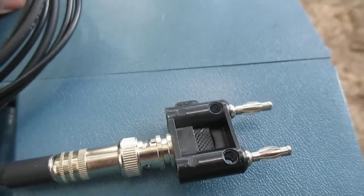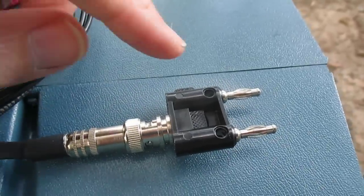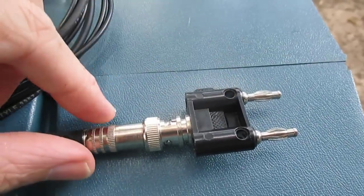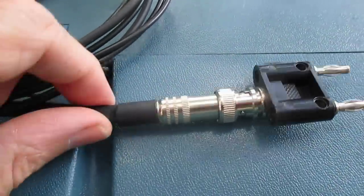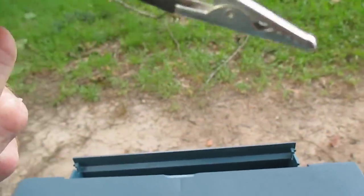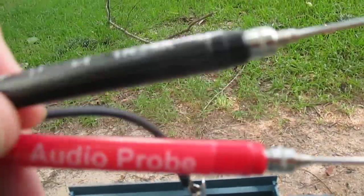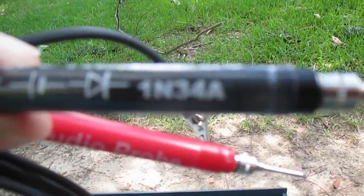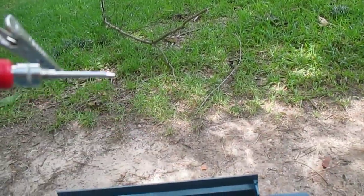Looking at the probe we have our banana jack to BNC adapter and then we have our shielded coax cable and this is our ground lead here. Then we have two probes here: the red is for audio and the black probe which contains a 1N34A diode and a capacitor, that's for our RF.